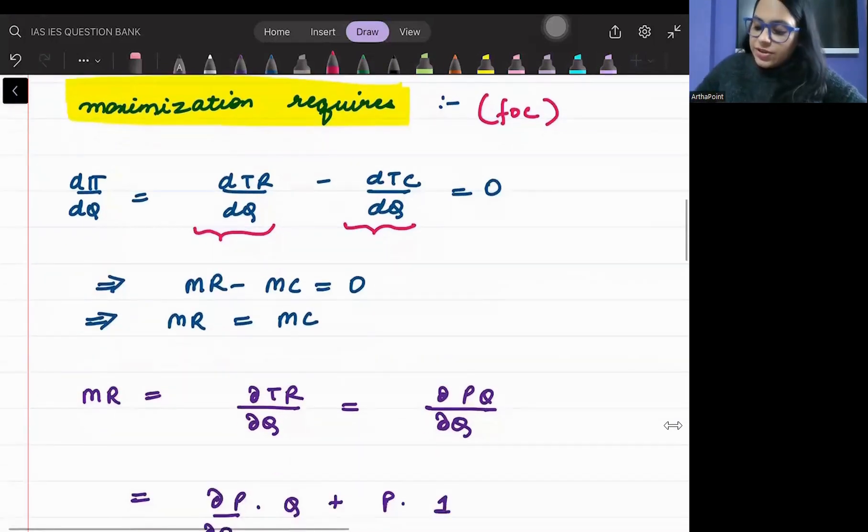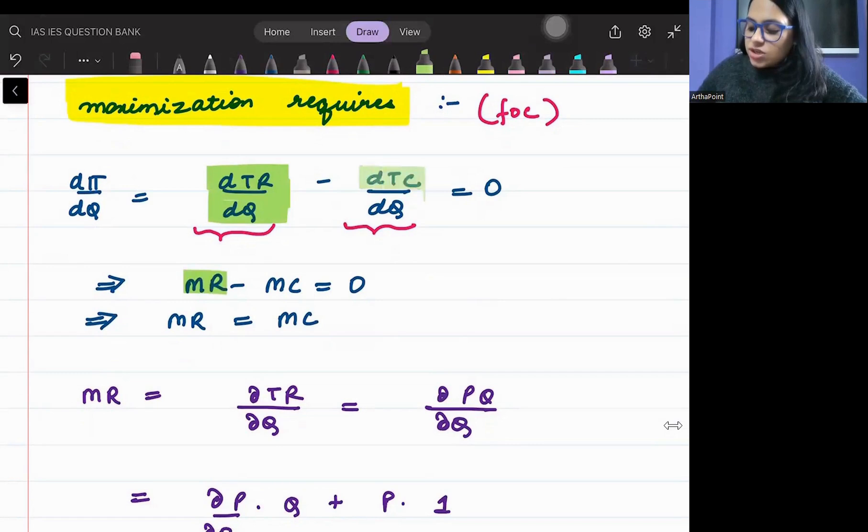When I differentiated dTR with respect to dQ, I got MR. When I differentiated dTC with respect to dQ, I got MC, and I equate it to zero. So my profit maximization condition is that MR should be equal to MC.